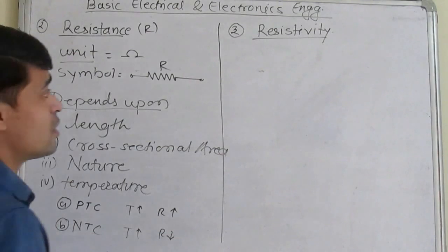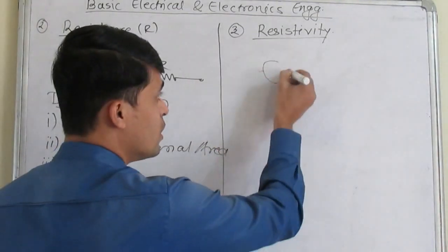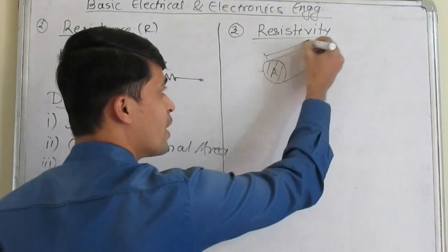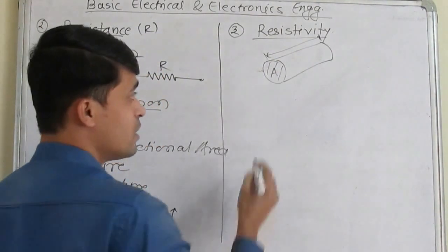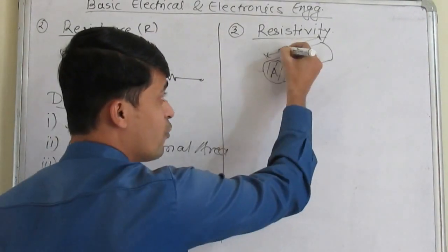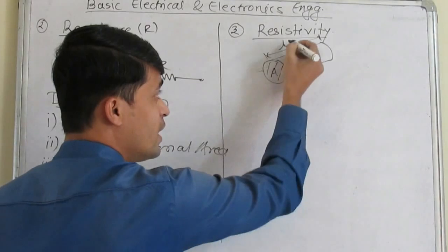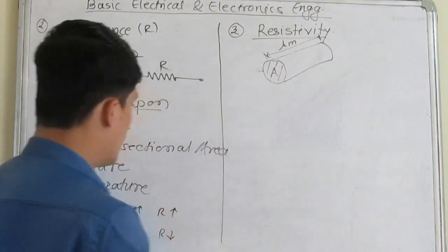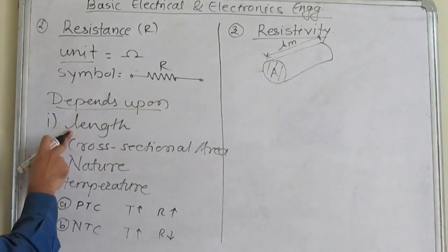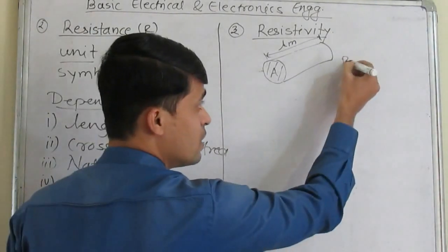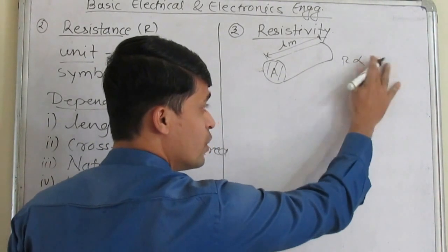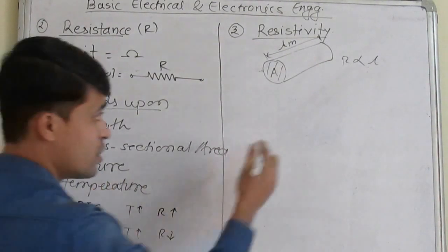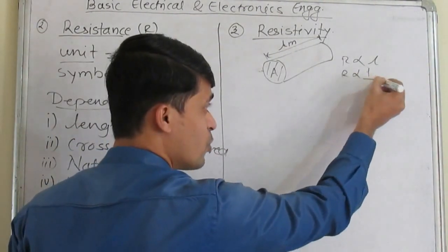Now we will see resistivity. What is resistivity? Suppose I am considering one cross-sectional area A and the length of a conductor L, measured in meters. We know the resistance is directly proportional to the length of the conductor, and inversely proportional to the cross-sectional area.